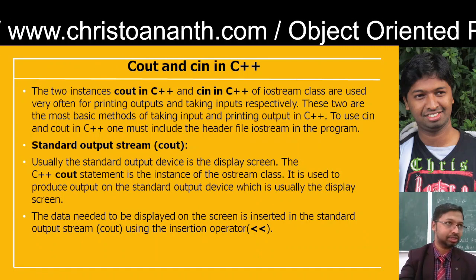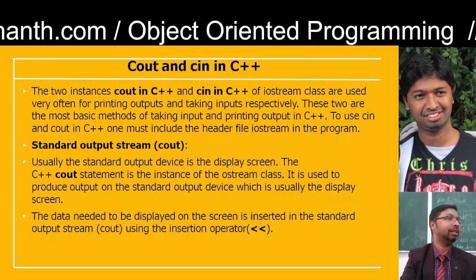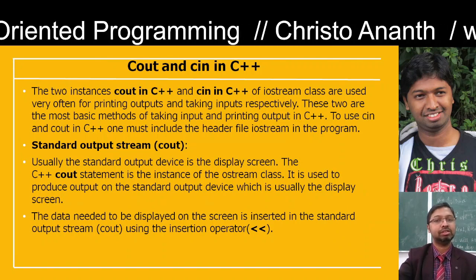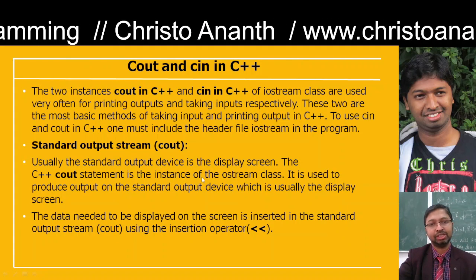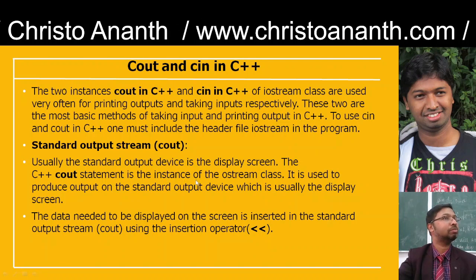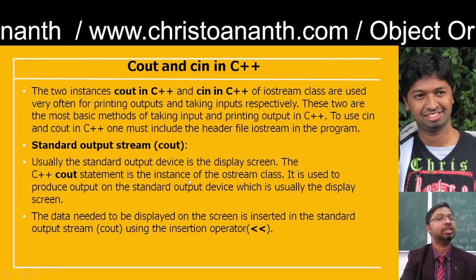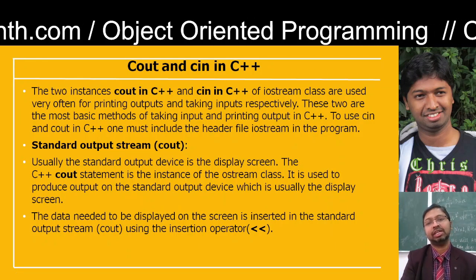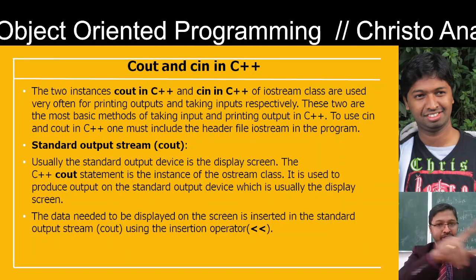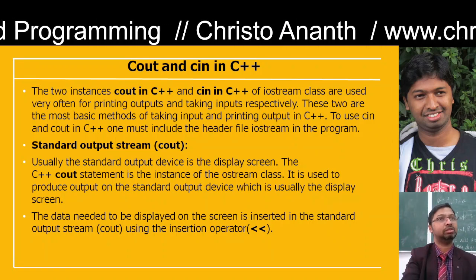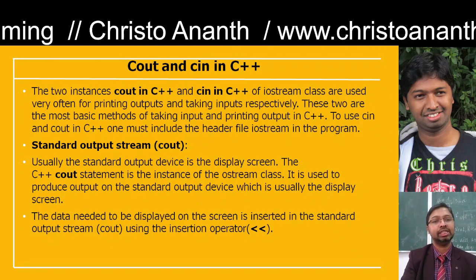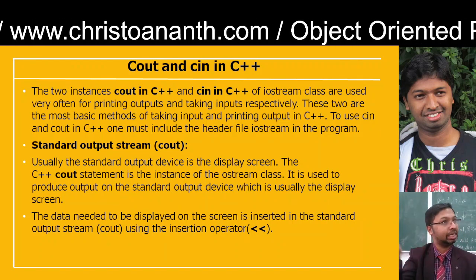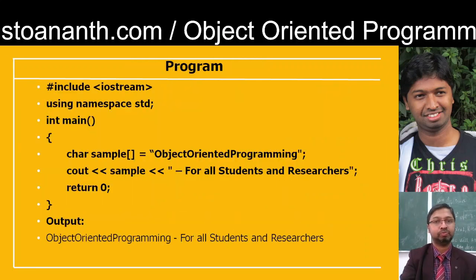In order to use cin and cout, you should include the header file input/output stream. cout is the standard output device. The C++ output statement is nothing but the instance of the output stream class. You are going to produce the output on the standard output device, which is actually the display screen. The data that has to be displayed is inserted in the standard output stream cout using the insertion operator — the double less-than symbol.